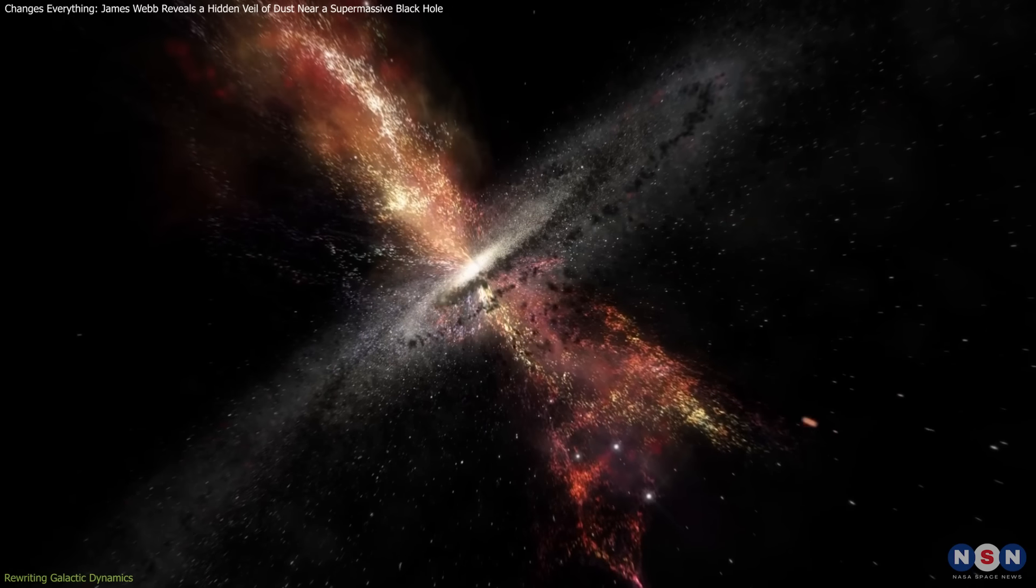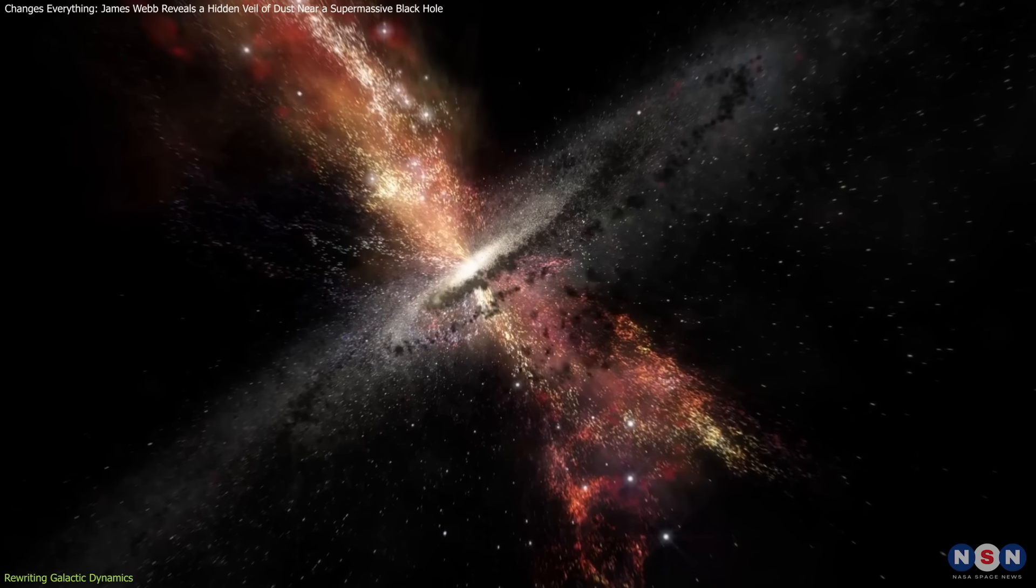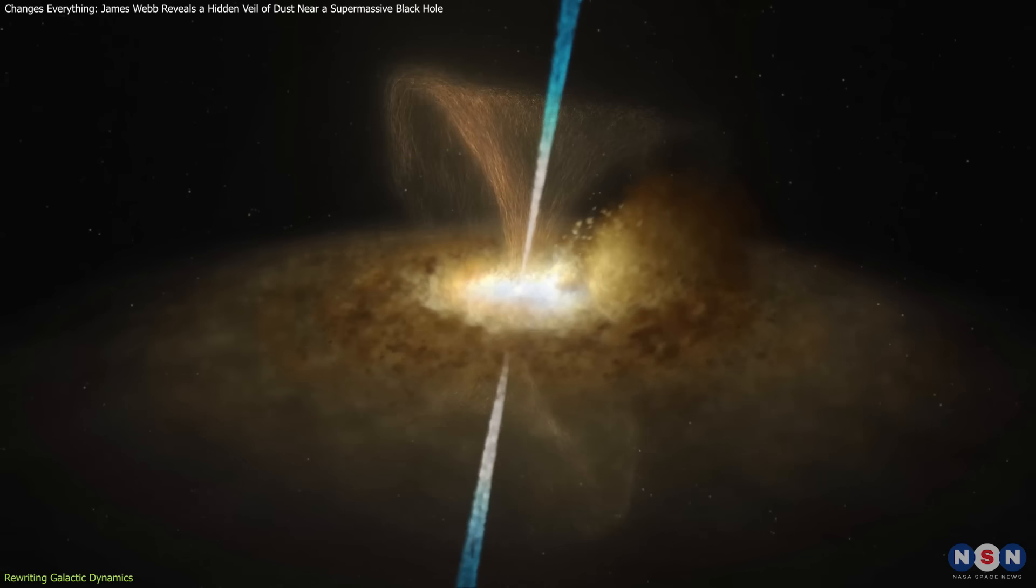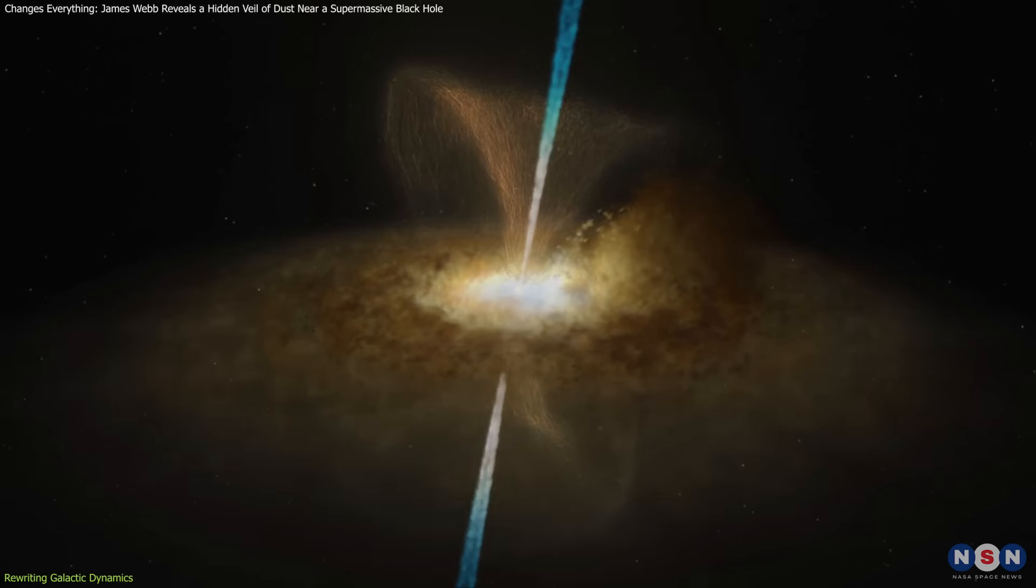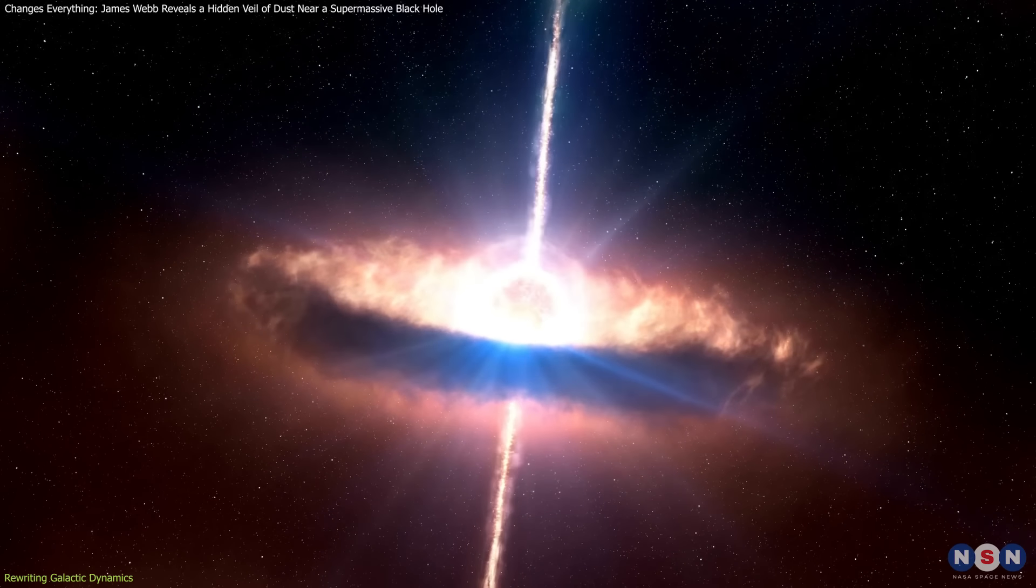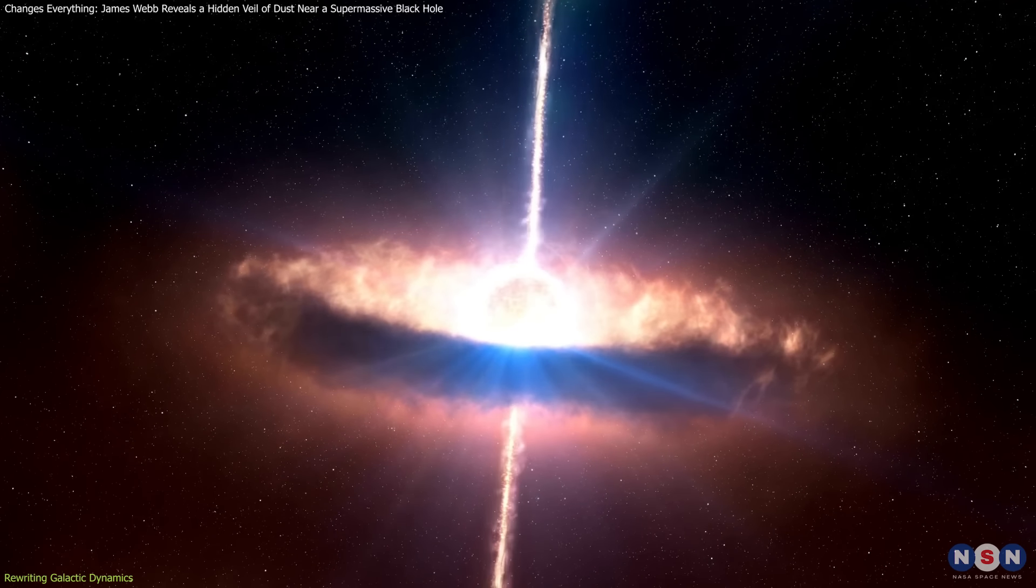For decades, the unified model of AGN has posited that the differences between Type 1 and Type 2 AGN are primarily due to the orientation of the dusty torus surrounding the supermassive black hole. Type 1 AGN are viewed more face-on, revealing broad emission lines and visible accretion disks,